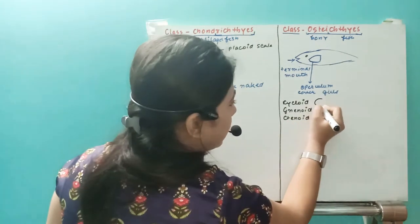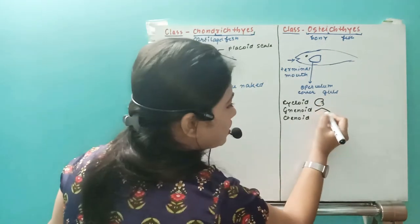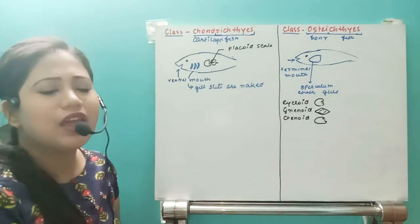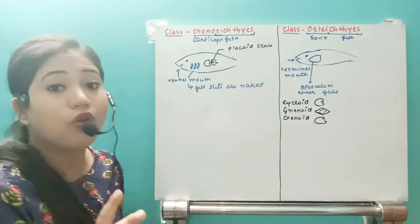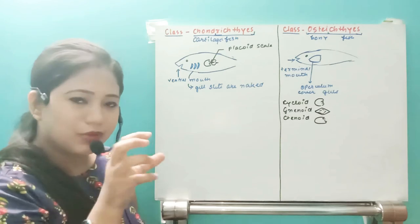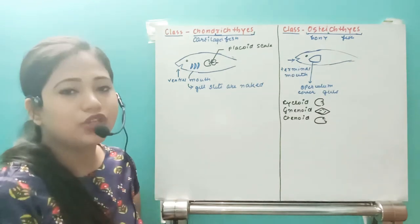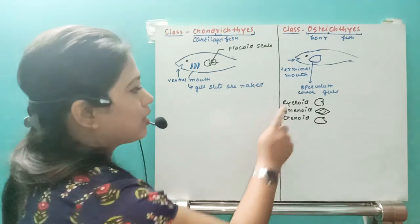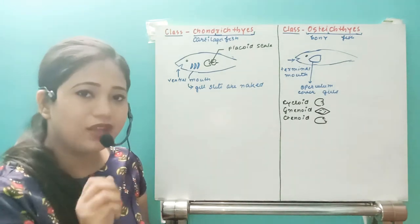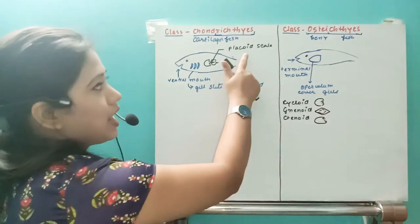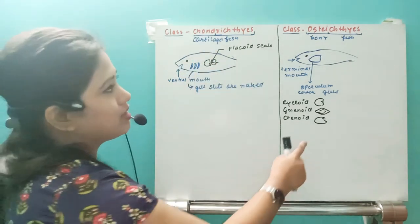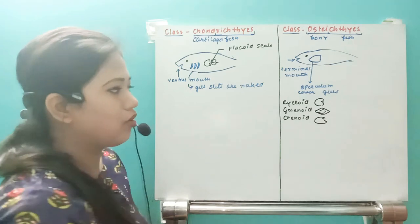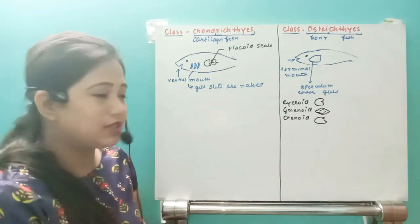To describe the scale shapes: cycloid scales are smooth and rounded, ganoid scales are also smooth, and ctenoid scales have small spine-like structures — for example, koi fish have ctenoid scales that can feel slightly rough. Cycloid and ganoid scales will not hurt at all. So the scale is placoid in Chondrichthyes, and cycloid, ganoid, or ctenoid in Osteichthyes.